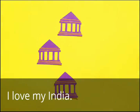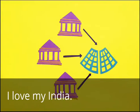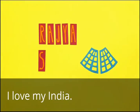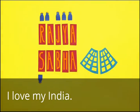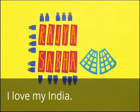Each state's legislative assembly also elects candidates into the upper house of the parliament. This is called the Rajya Sabha or the Council of States. Each state has a specific number of seats allotted in the Rajya Sabha, which are in proportion to the state's population.